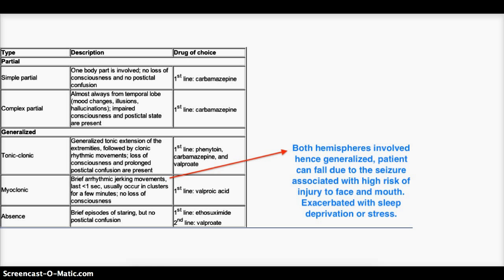The next one is myoclonic, which is basically there are arrhythmic jerking movements. Like tonic, which had the rhythmic, clonic, and tonic movements, this one is arrhythmic, and this has jerking movements, which lasts for less than one second. They usually occur in clusters. There is also no loss of consciousness. This can also be added to the exception with the simple, where there is no loss of consciousness. First line is valproic acid.